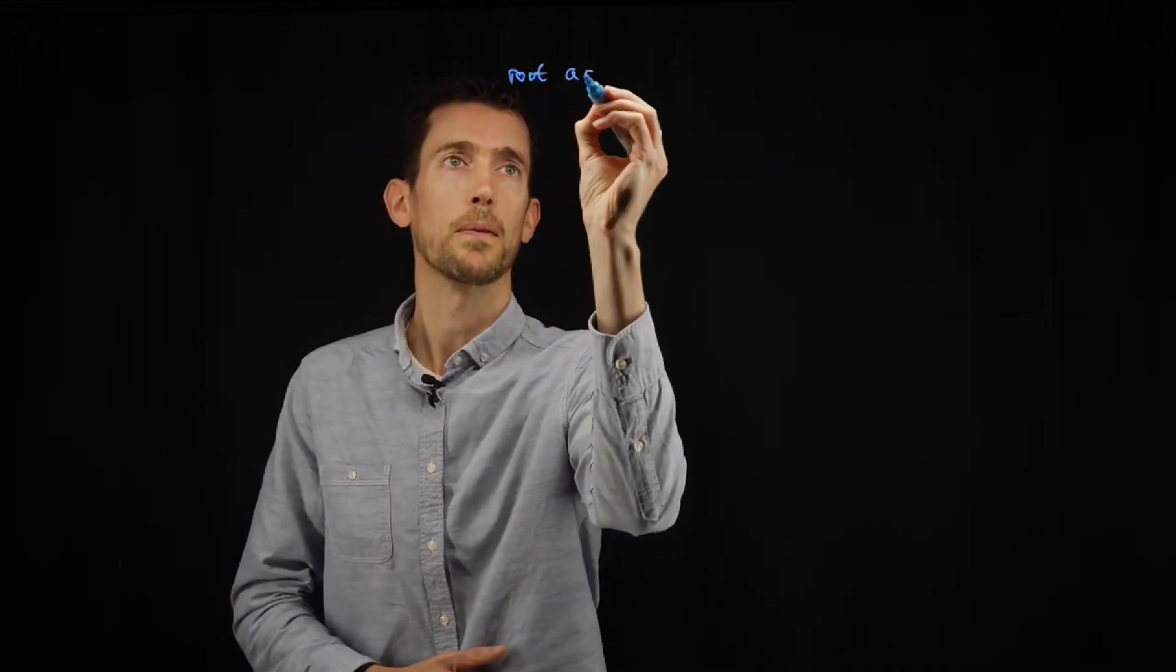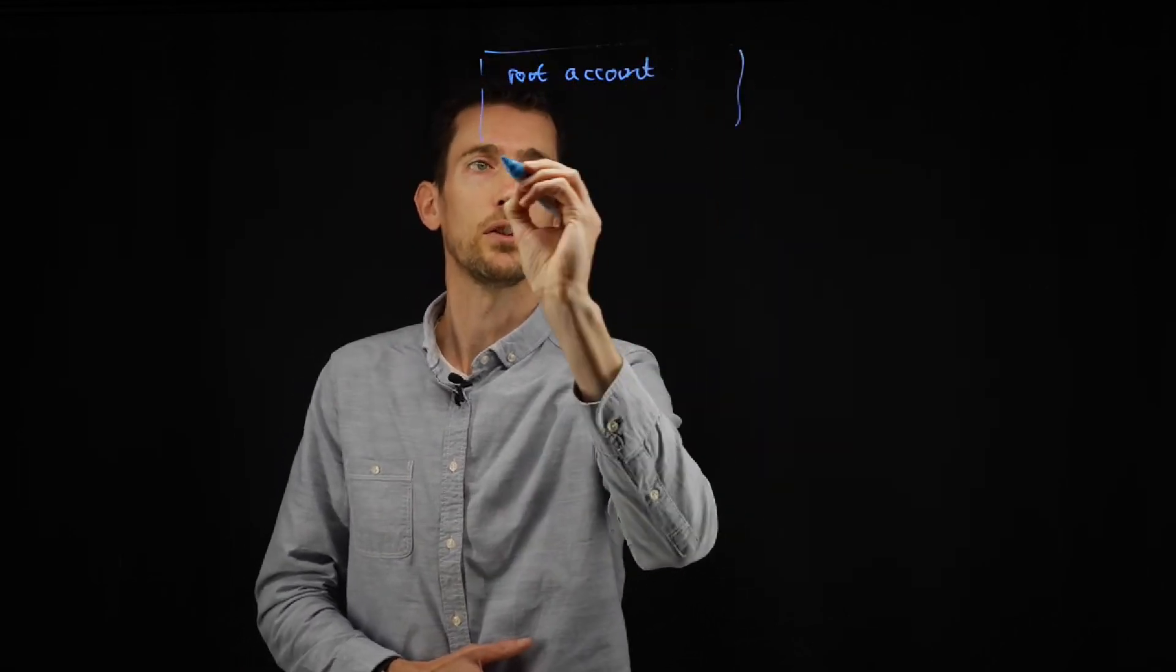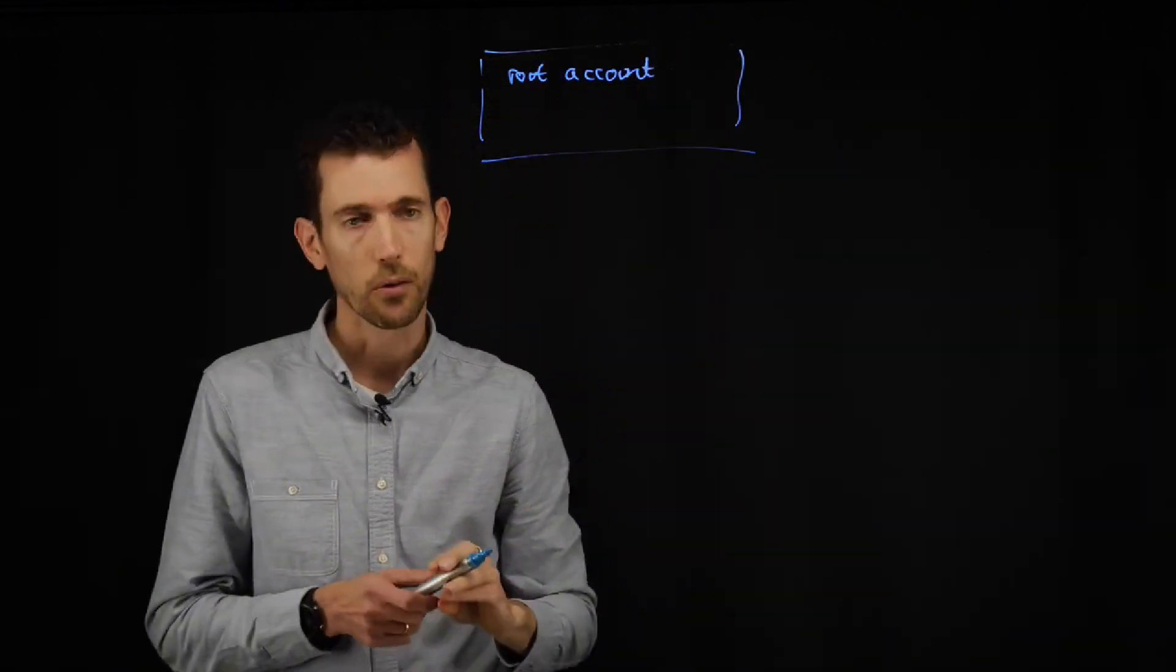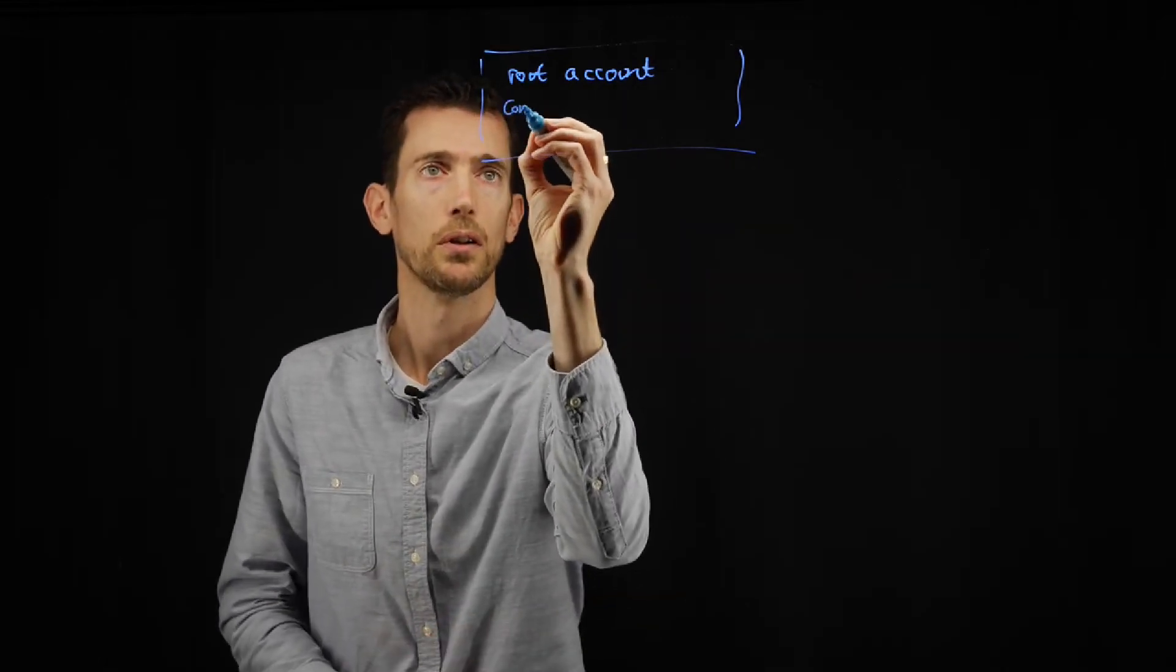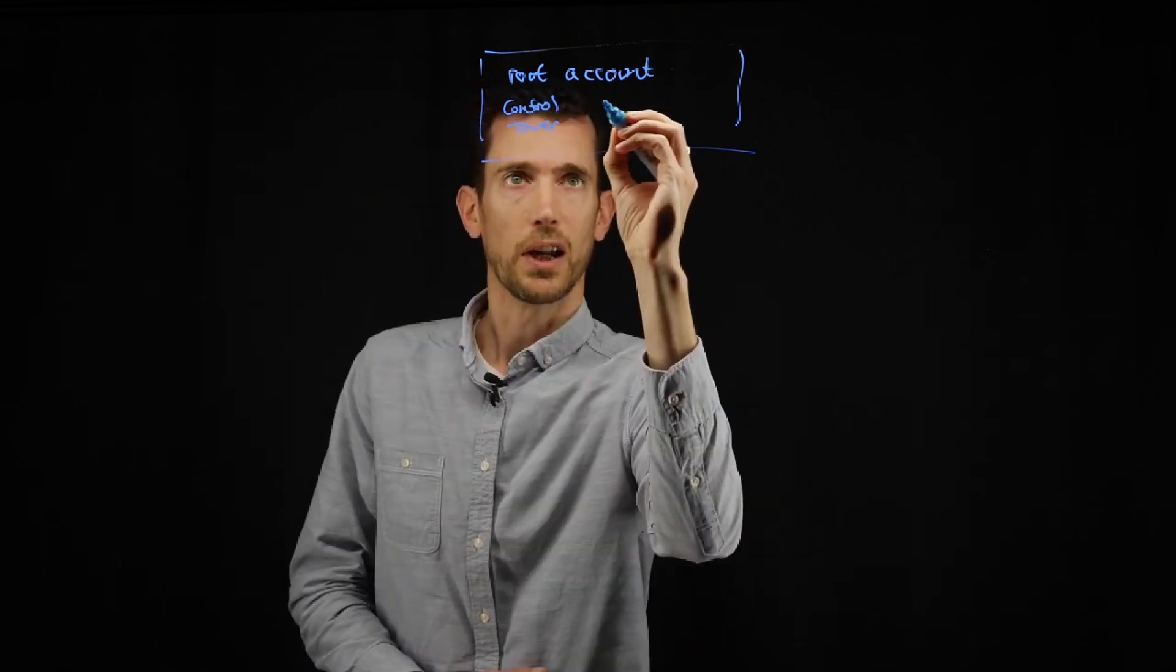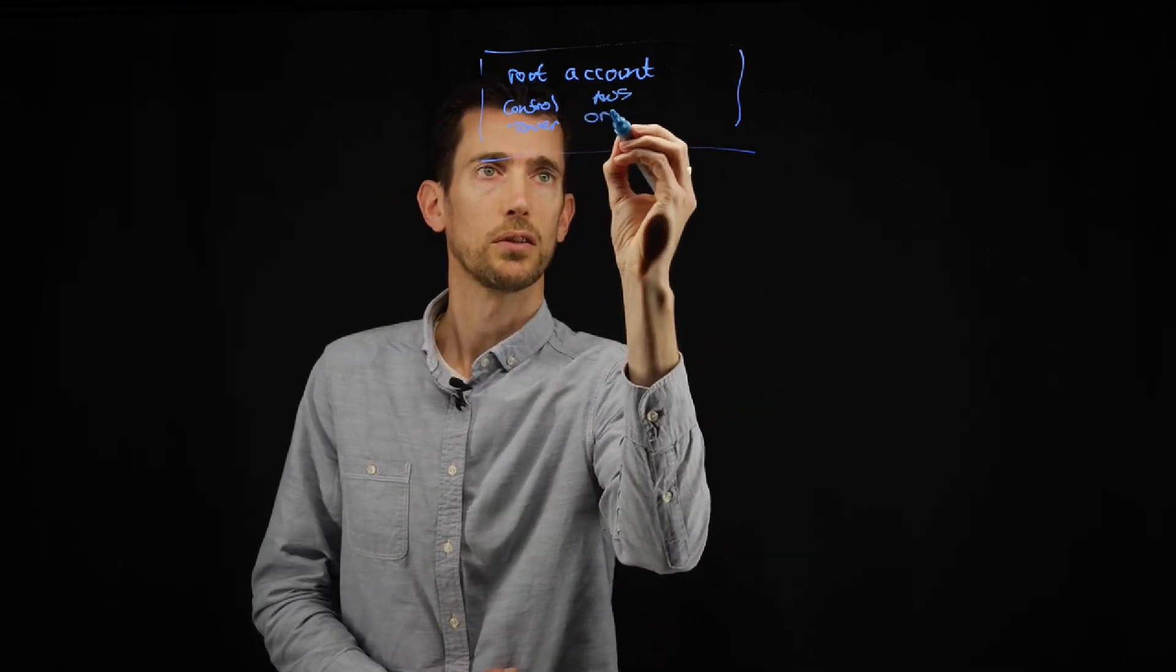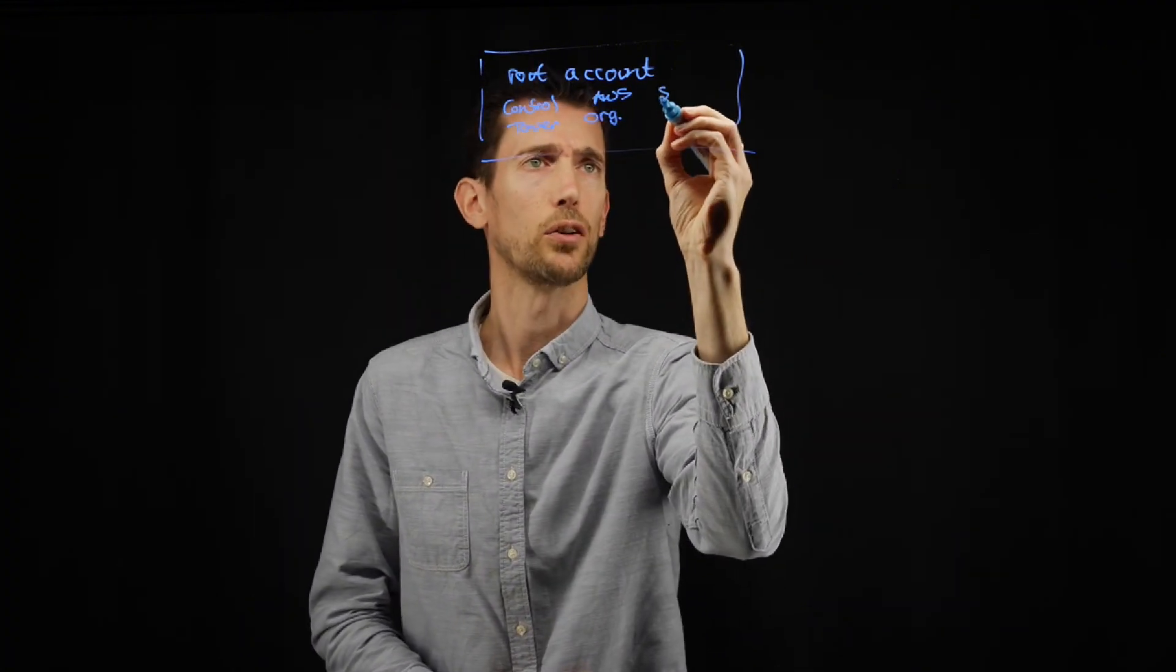So we'll start with a root account. So this really sits at the top of everything. Now within that root account you would have a control tower, you would have your AWS organisations and you would also have a service catalogue.